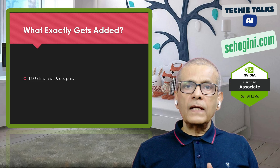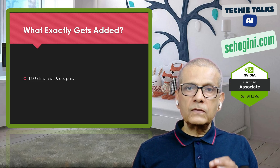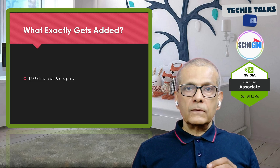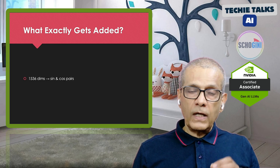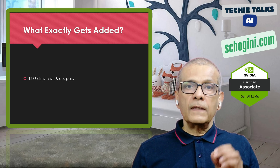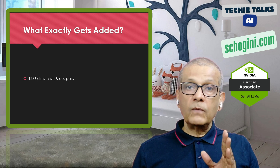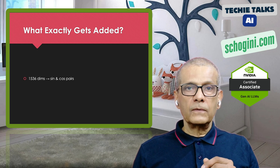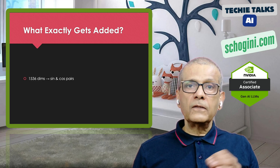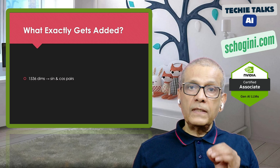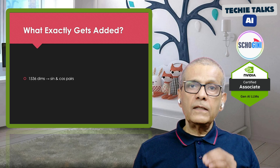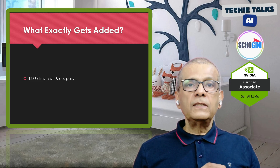What exactly gets added? For 1536 dimensions, every pair has a sine and cosine wave: dimension 0 sine, dimension 1 cosine, dimension 2 sine, dimension 3 cosine, and so on up to dimension 1535. There are 768 frequencies, each encoded across sine and cosine channels. Each dimension pair is like a clock ticking at a different speed — these sine-cosine pairs are tiny clocks ticking at unique speeds, marking each position.